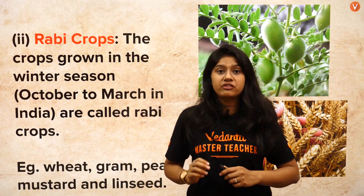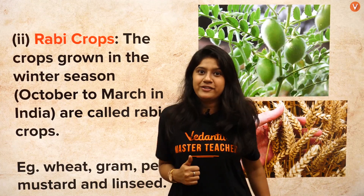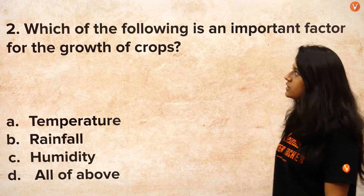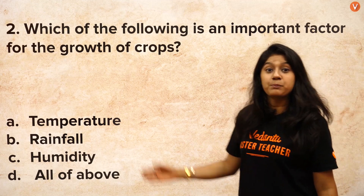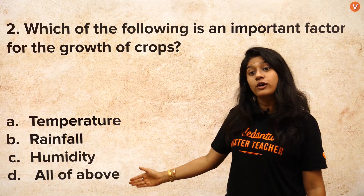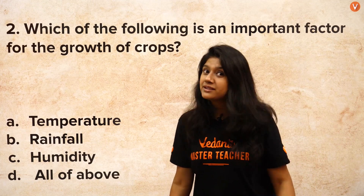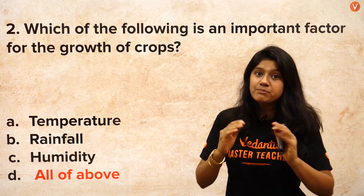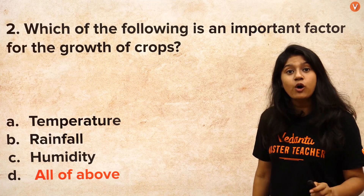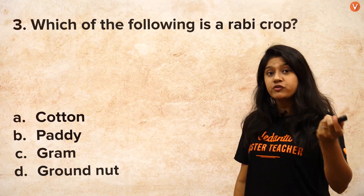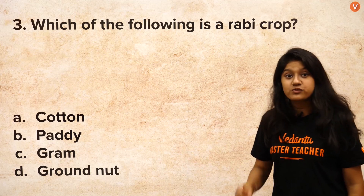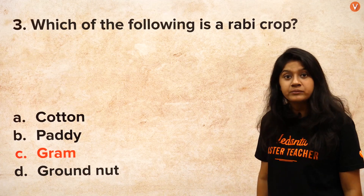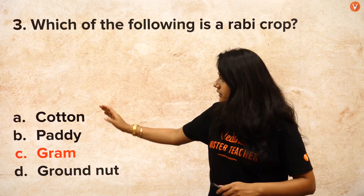So we have two types of crops: Rabi crops and Kharif crops. Now let's do some question solving. Which is an important factor for the growth of plants — temperature, rainfall, humidity, or all of the above? The answer is all of the above. All three are equally important. Next question: which of the following is a Rabi crop? The correct answer is gram. Gram is a Rabi crop, while the others are Kharif crops.